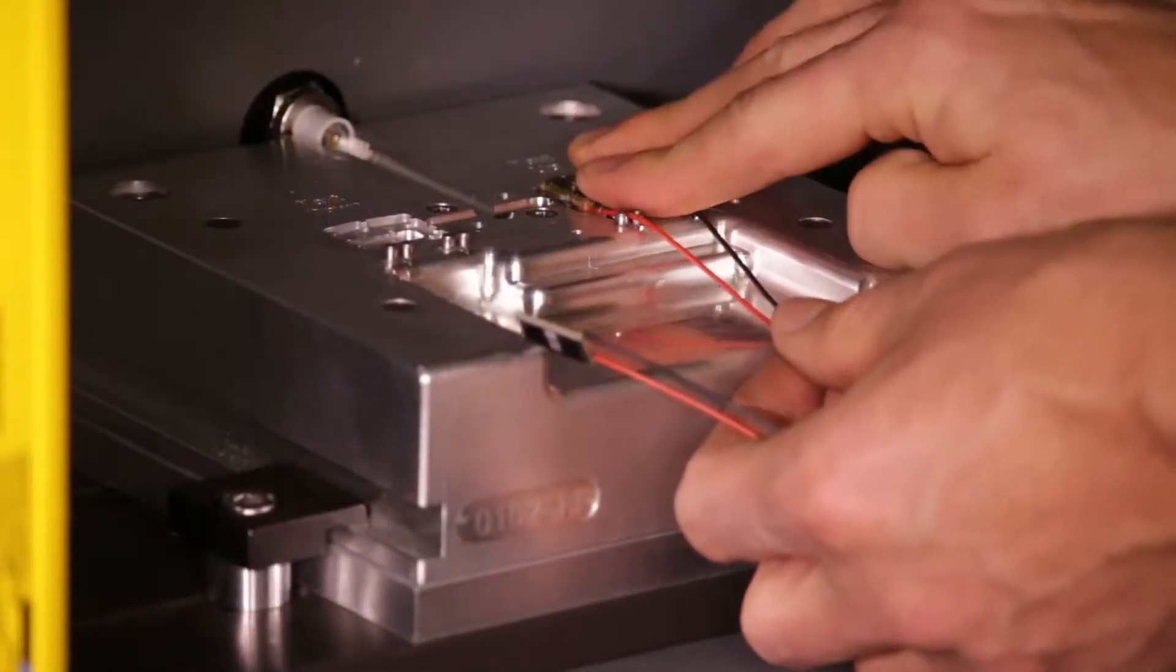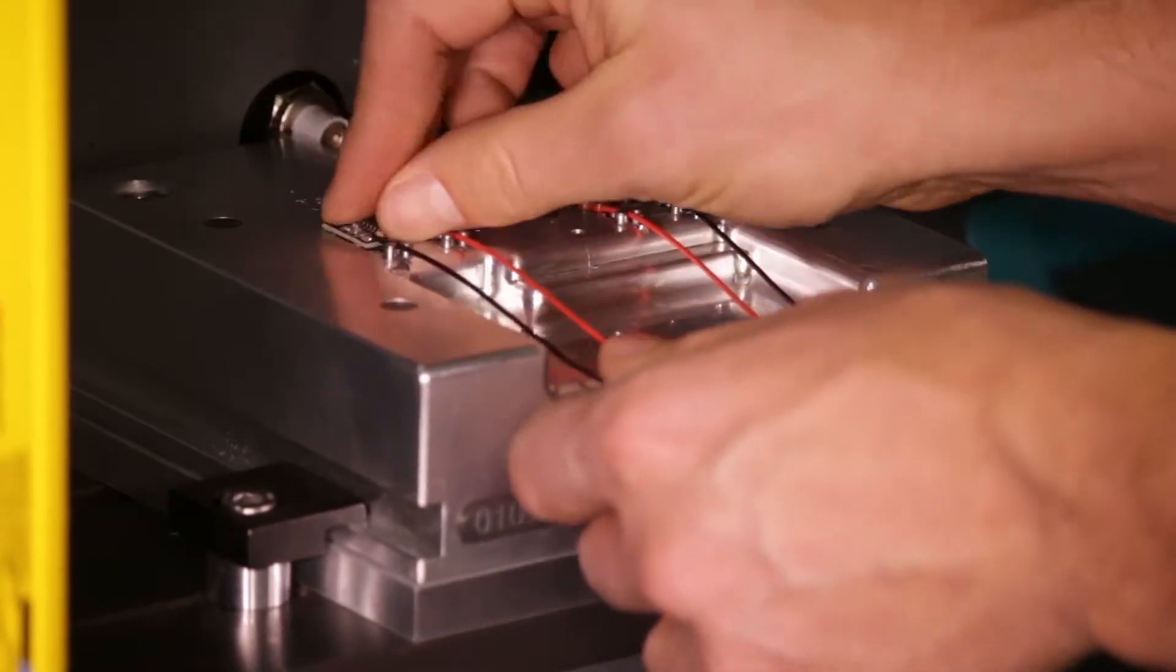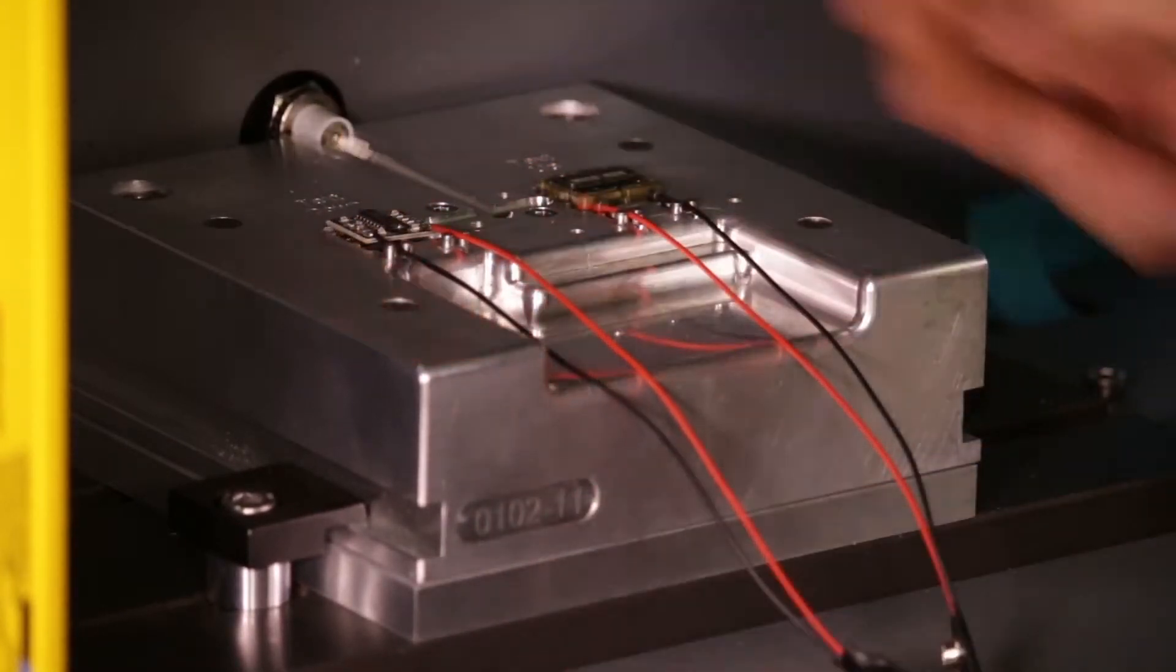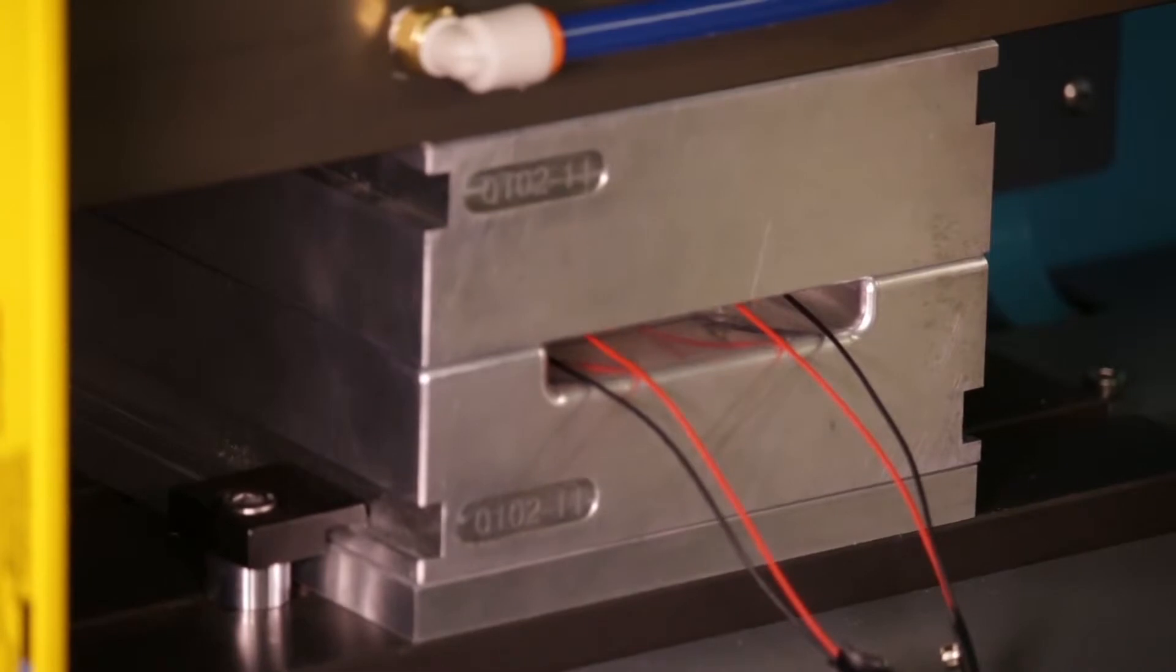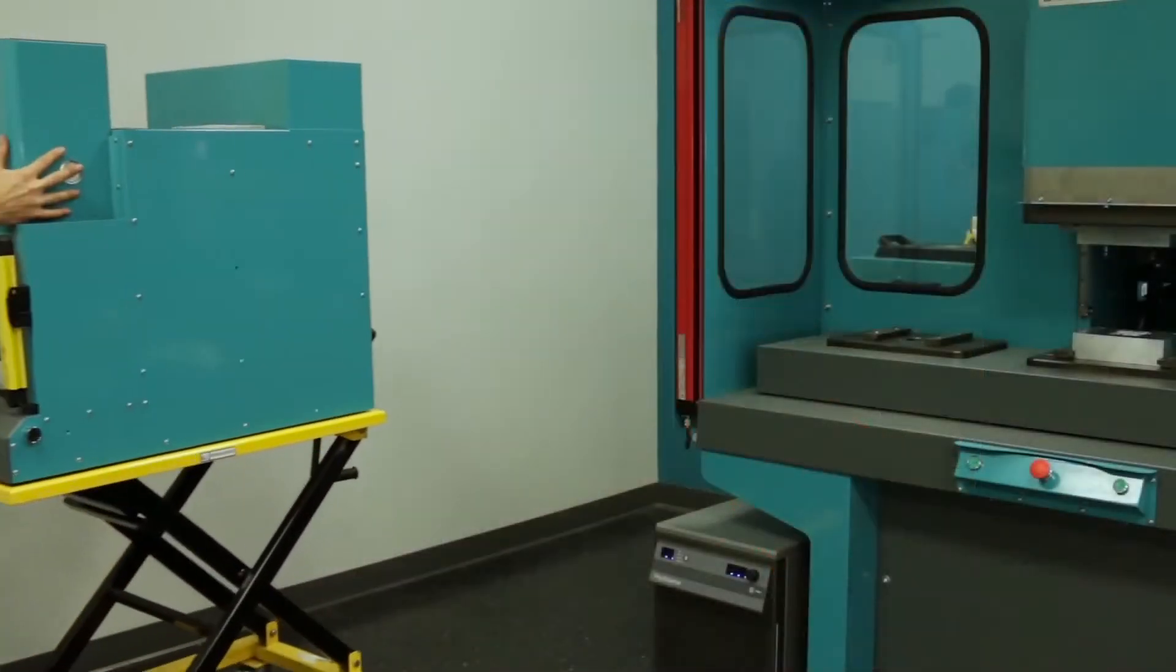The Moldman 1050 is ideal for encapsulating electronics from prototyping to short and medium runs with the ability to run multiple materials and will fit in just about any workspace.